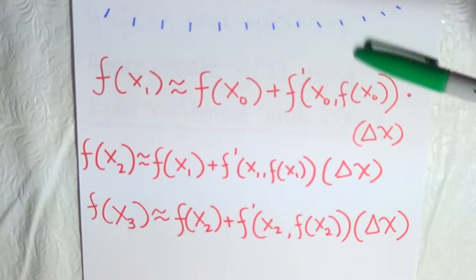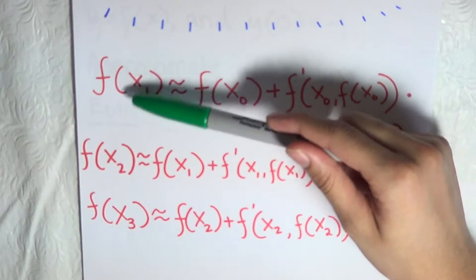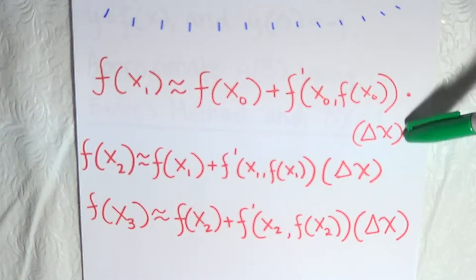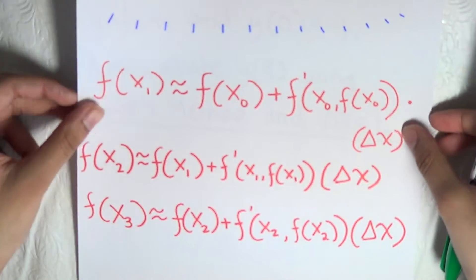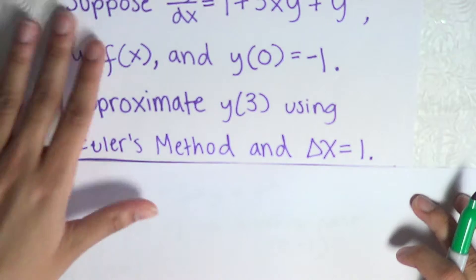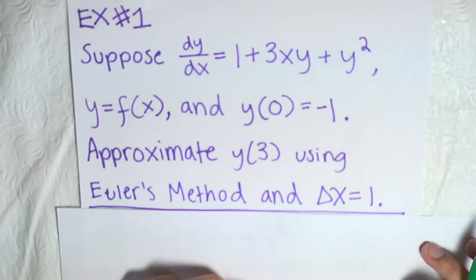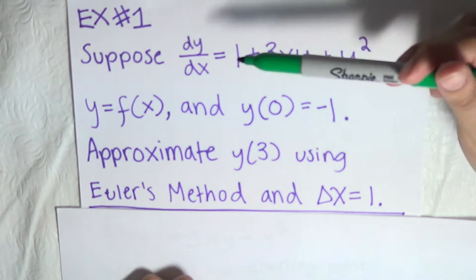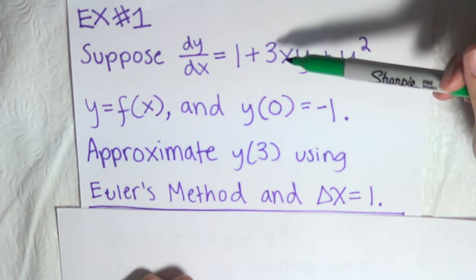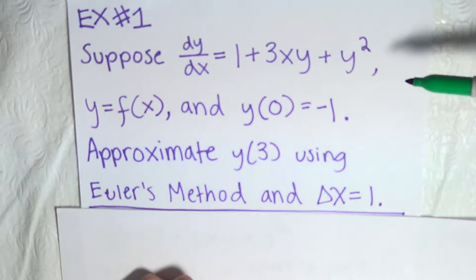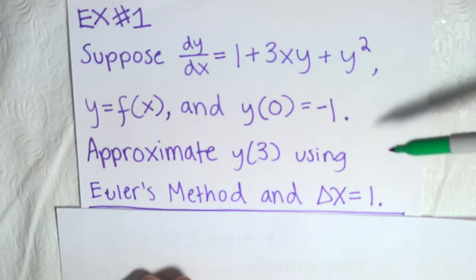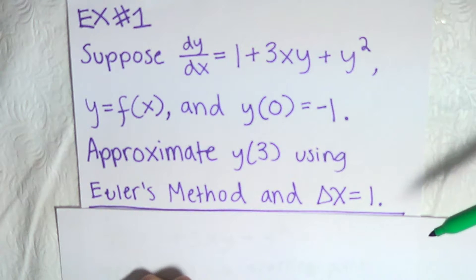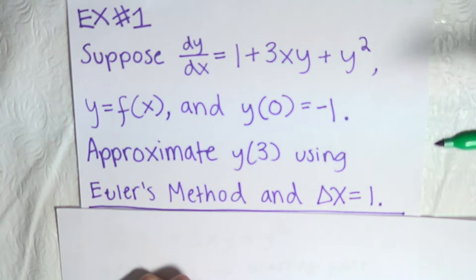The x values inside the function change while the delta x's stay the same, and you will see that in the example. So let's do an example. Suppose that we have dy/dx equals 1 plus 3xy plus y squared, y equals f of x, and y of 0 equals negative 1. Approximate y of 3 using Euler's Method with delta x equals 1.